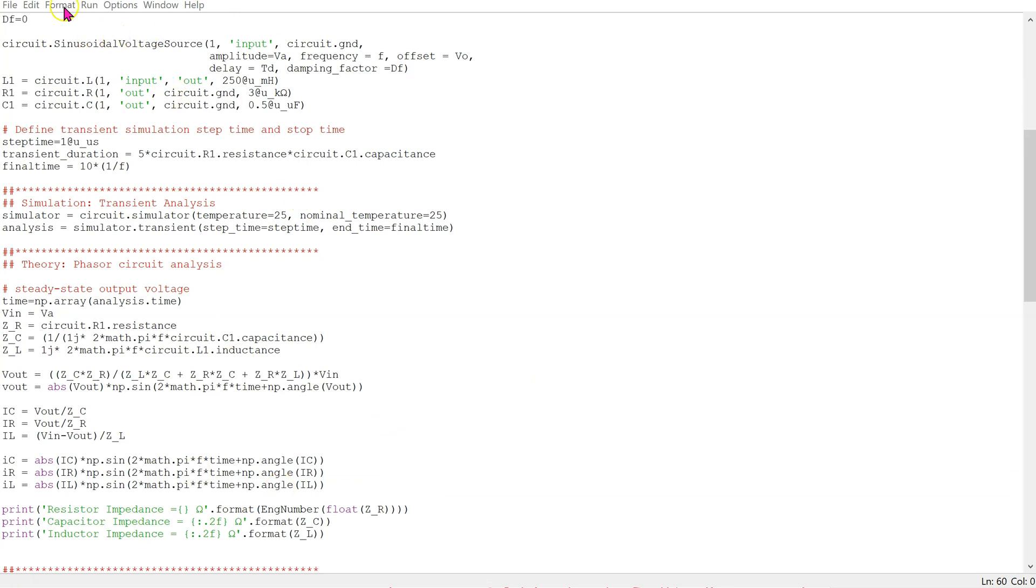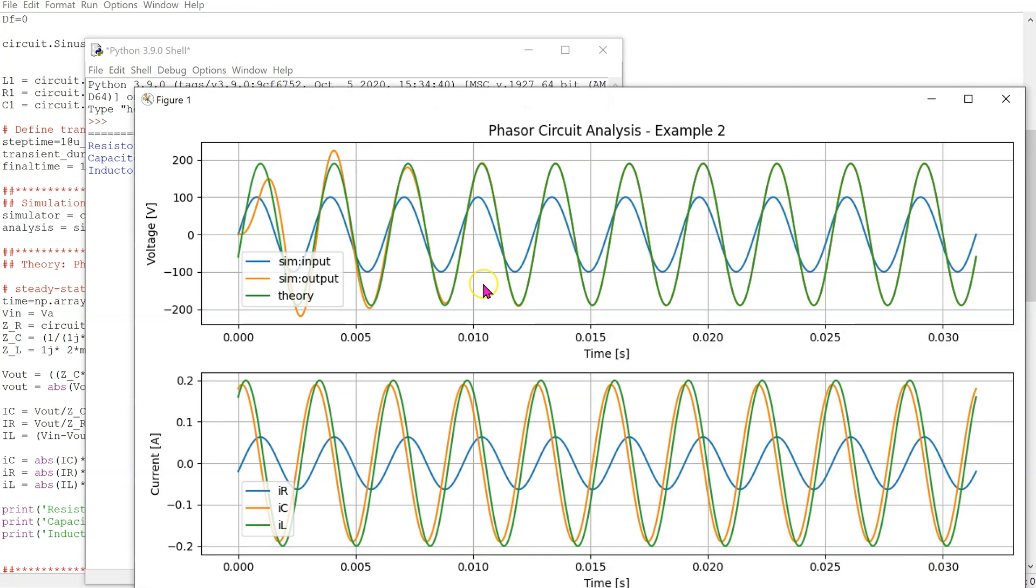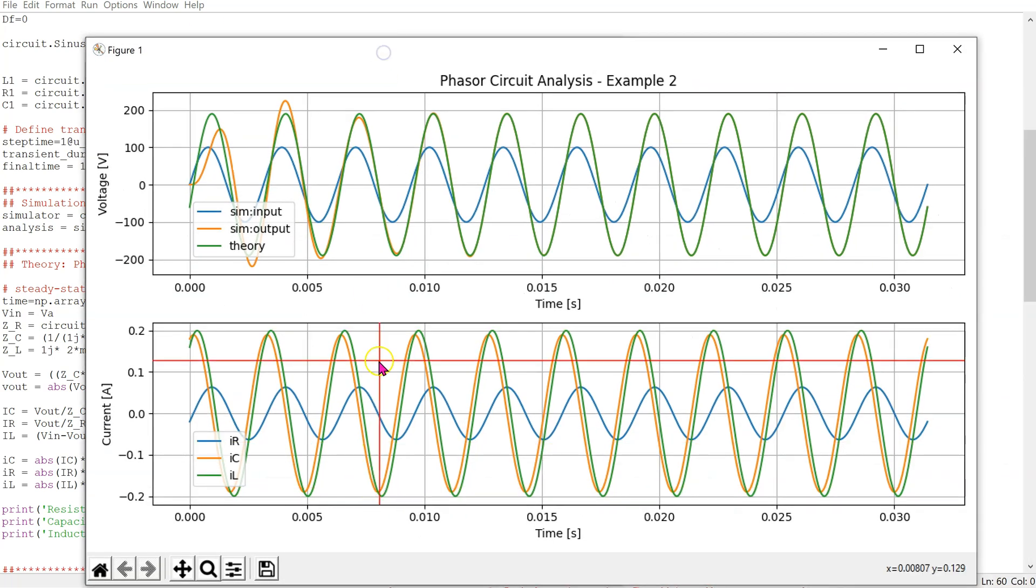When we run this code, we can see the voltages and the currents in the circuit. The theory prediction for the output voltage in green matches the simulated output voltage in orange once the steady state is reached.